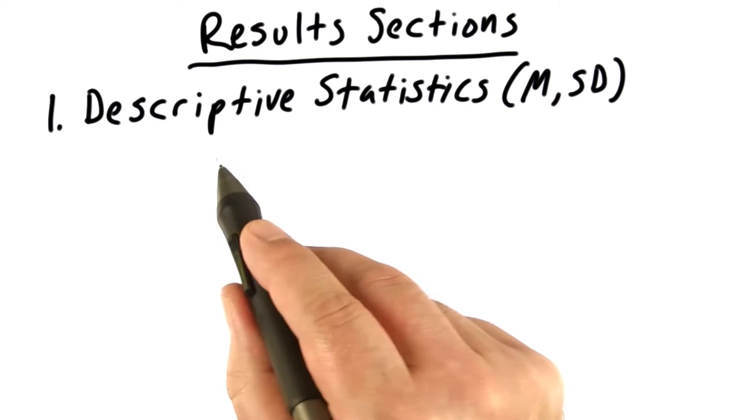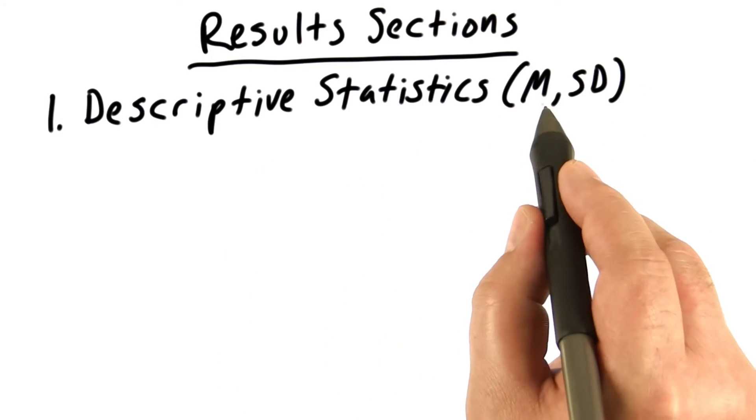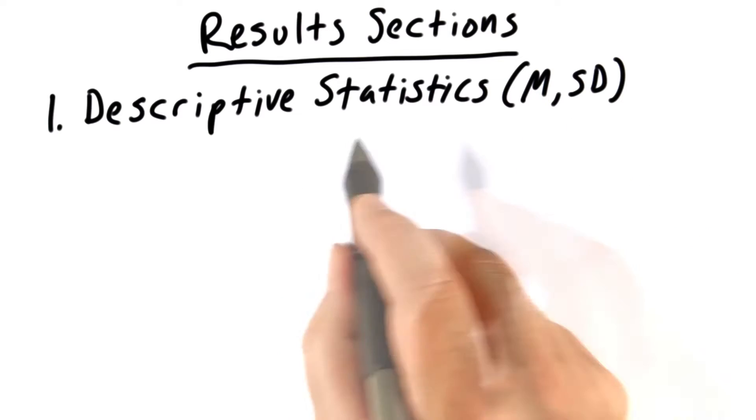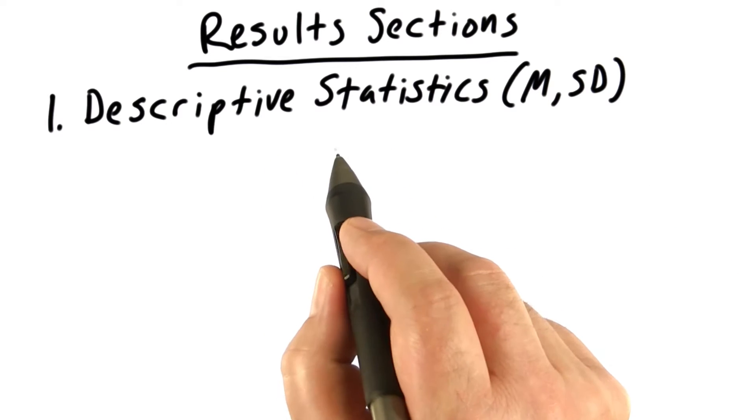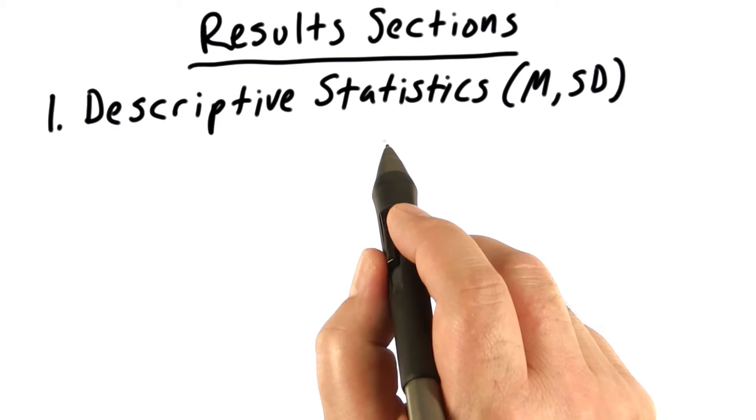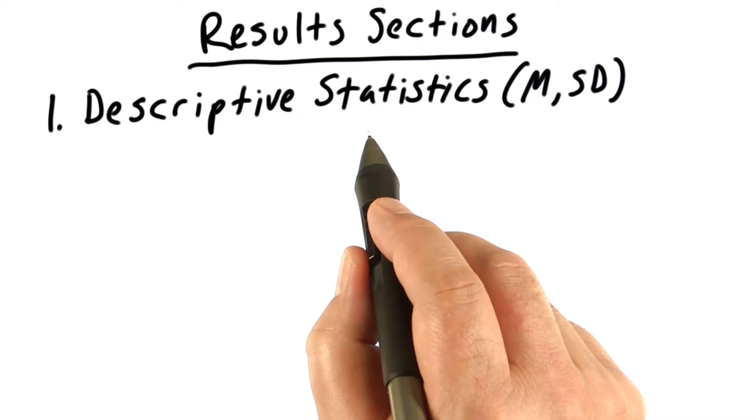The first thing we put in our results sections are descriptive statistics. For example, the mean and standard deviation. The descriptive statistics represent the heart of our study. This tells us exactly what happened in our study and should always be reported.